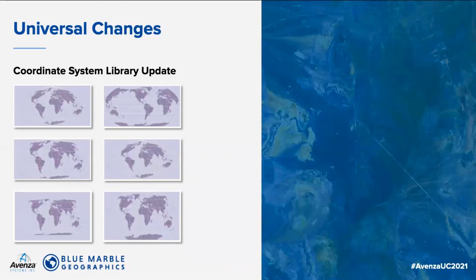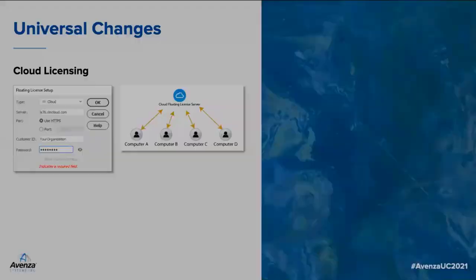Along with improvements to our engine and bug fixes, we have built on our current coordinate system catalogue with updates to the coordinate system and projection library with Blue Marble Geographics. Our list of supported projections has grown, with new additions including the Natural Earth and Natural Earth 2 projections created by Tom Patterson. We haven't updated our core library here for some years, so I'd really like to recognize our development and QA teams both here and at Blue Marble for completing this significant project over the last year.